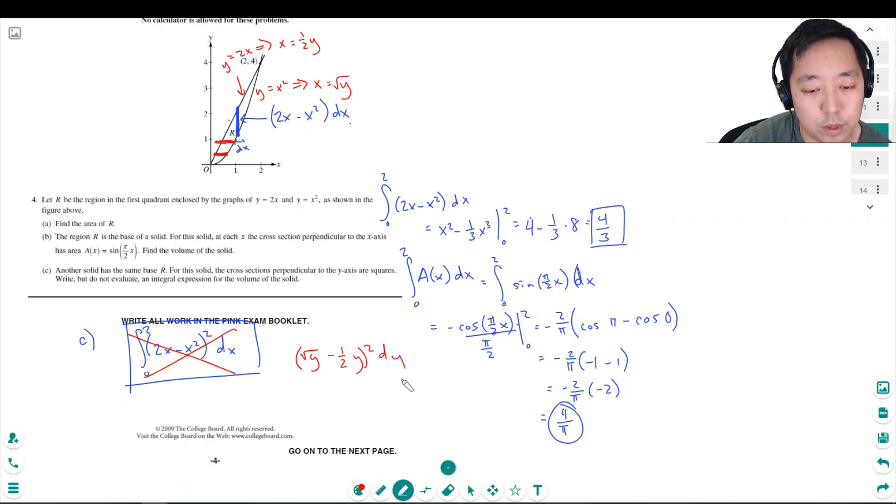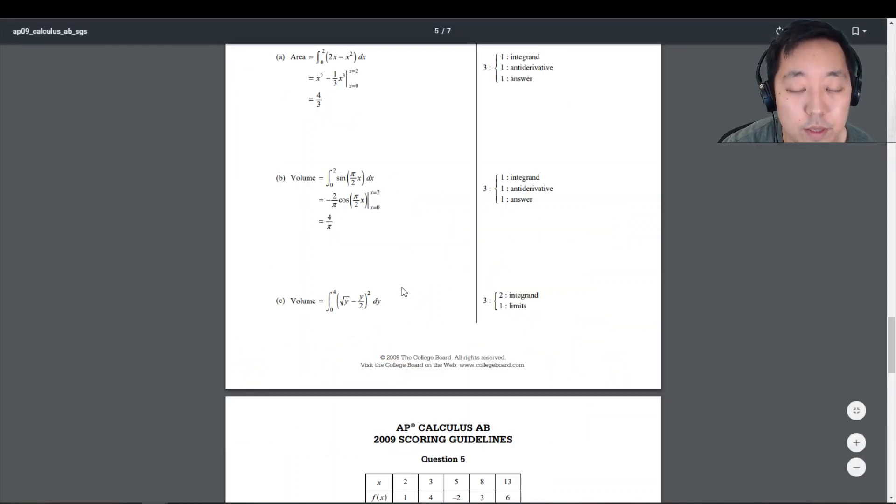Then I gotta square it to find the area, then I multiply by the thickness to get the volume. And then I'm going to integrate from y. Now I'm integrating over y, so I'm going from y equals 0 to y equals 4. So that would be the setup instead. And that's it.